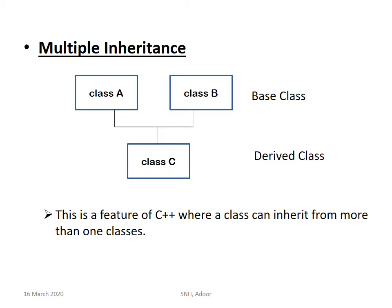Next is multiple inheritance. Multiple inheritance means more than one parent class will be there and one derived class will be there. Class A and class B are the base classes, and from them joined together we get a derived class, class C. C has the properties of both A and B — that is, C inherits the properties of A and B. This is a feature of C++ where a class can inherit from more than one base class.